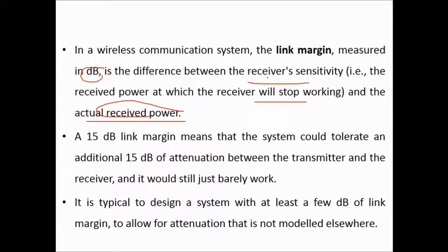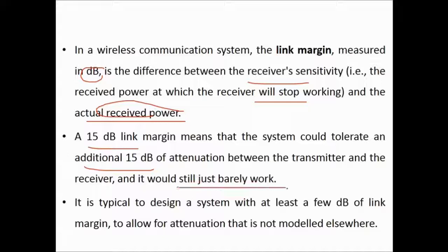For example, a 15 dB link margin means that the system could tolerate an additional 15 dB of attenuation between the transmitter and the receiver, but it would still just barely work. It is typical to design a system with at least a few dB of link margin.